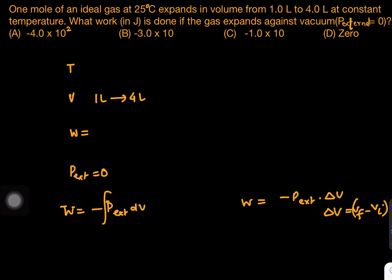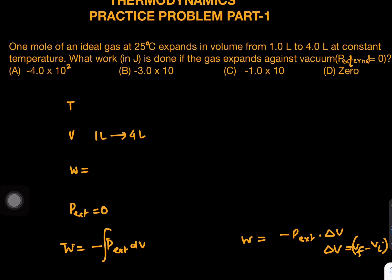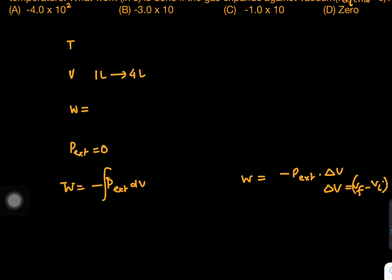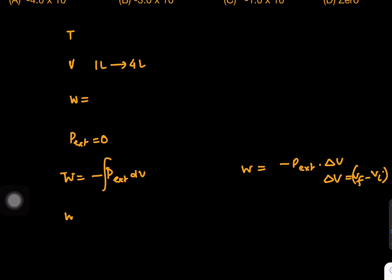So can I say, if this question we talk about, they are not mentioning whether it is reversible or irreversible. They are saying the constant external pressure which is 0. So if we take P external delta v, where P external itself is 0, definitely the work done has to be 0.